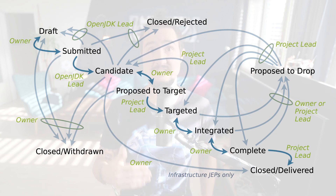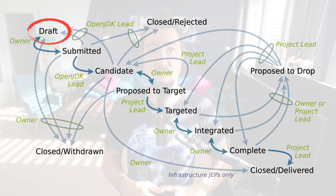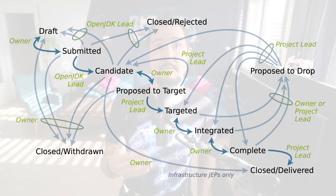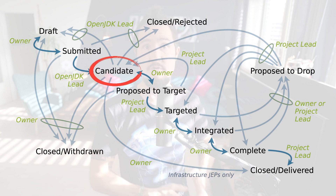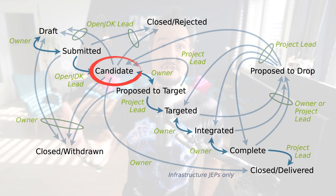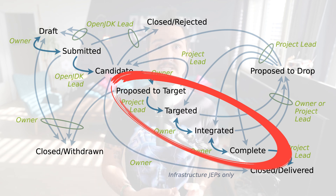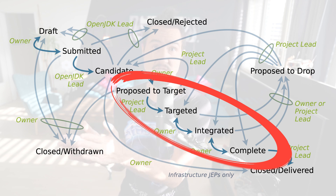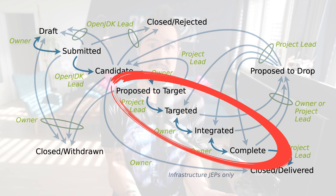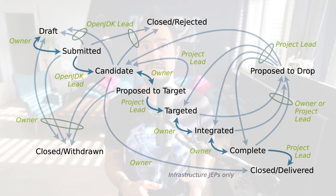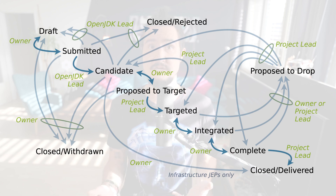The first state in every JEP's lifecycle is draft. A lot can change here, and it's not advisable to form an opinion about what's going on this early on. Once the JEP owners are happy, they submit the JEP, and then the OpenJDK lead, Mark Reinhold, may make it a candidate JEP — and this is the state most JEPs have for most of their existence. As work on them progresses, further changes will be made until eventually they go down the road of publication. Owners propose to target a specific JDK release, and the project lead can confirm making the JEP targeted. Once the code is merged, the JEP is integrated, and once all follow-up work is completed, it's complete. Still, however unlikely, things can change — they're only settled once the JDK version is released, at which point the JEP is closed as delivered. Early on, owners can also withdraw a JEP, or the OpenJDK lead can reject it, and once it has been targeted, the owner or the project lead can propose to drop it.